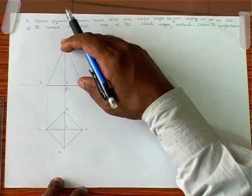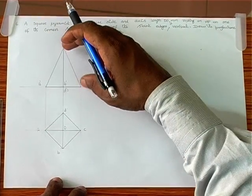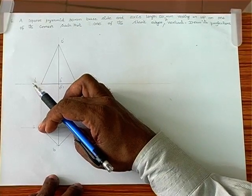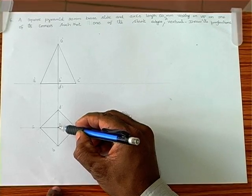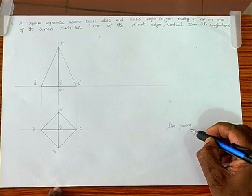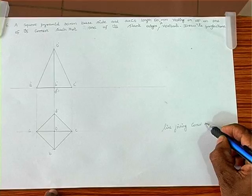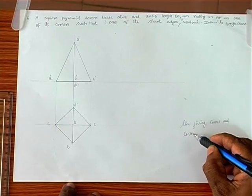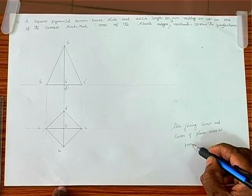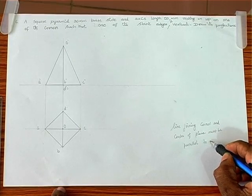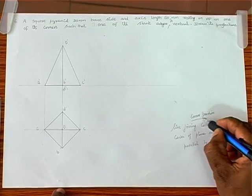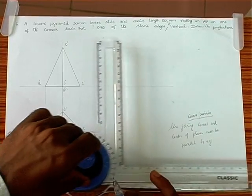It is given that one slant edge is vertical. We may consider OC or OA. We have to keep this inclined slant edge as vertical in the second position. This is possible only when we use the corner position. The rule for corner position is: the line joining the corner and center of the plane must be parallel to XY — then only we get corner position.